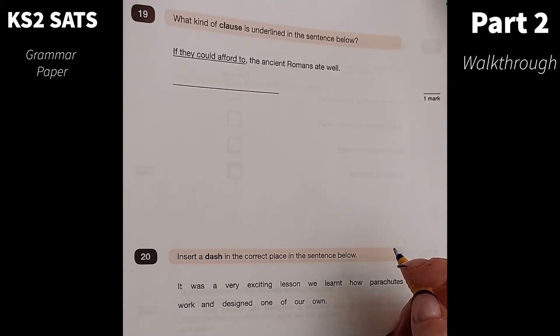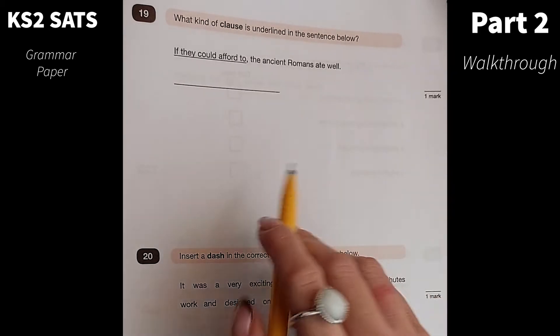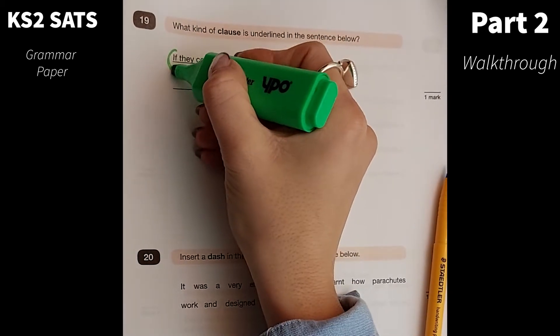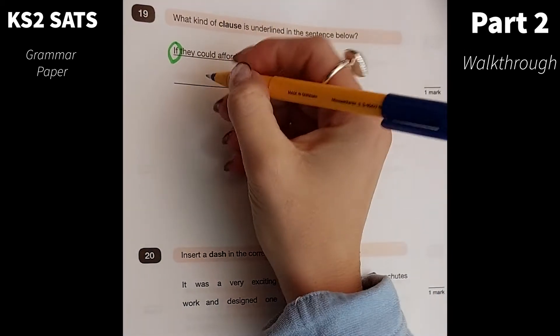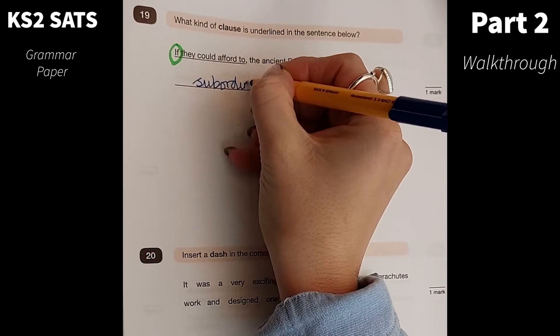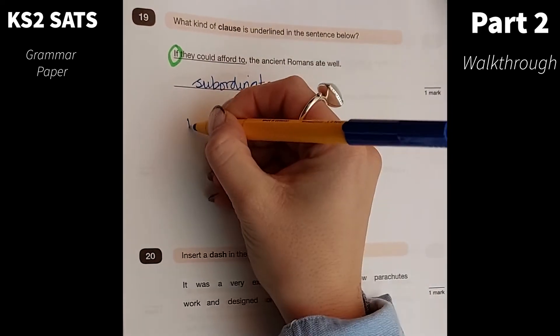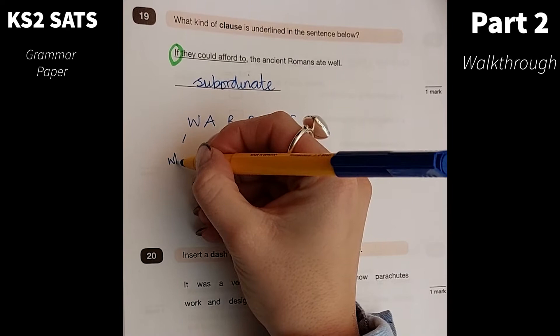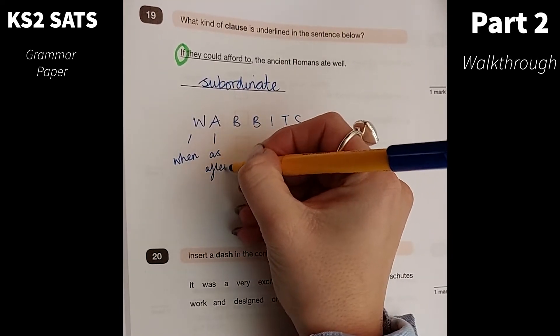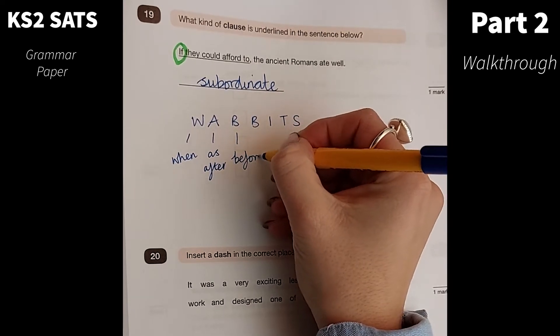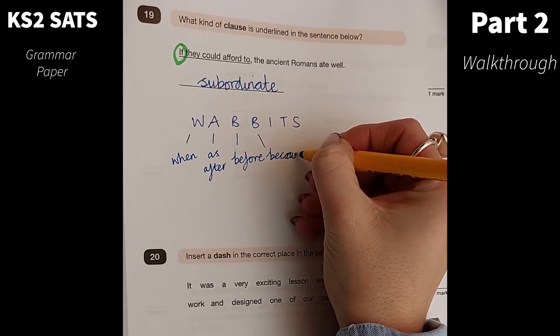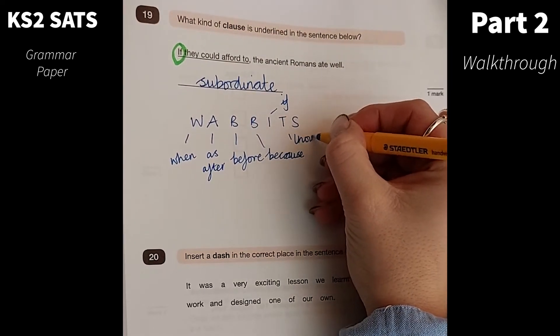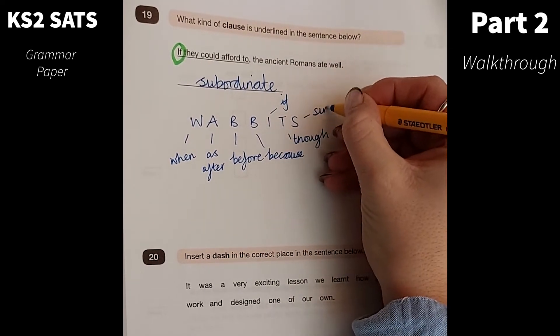What kind of clause is underlined in the sentence below? If we have a look at the sentence, if they could afford to, the ancient Romans ate well. We should know that because if is a subordinating conjunction, we know that that is a subordinate clause. We can remember the subordinating conjunctions by looking at WABBITS. So you could have when or while, as or after, before, because, if, though, and since.